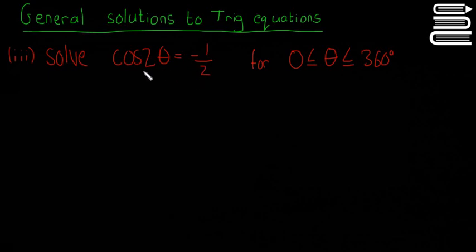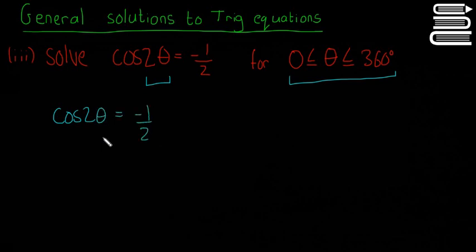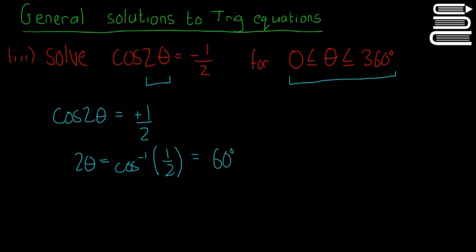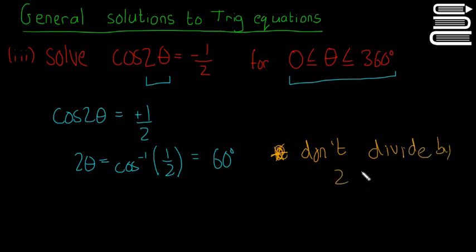So the reason this one's more difficult, there's a little bit more to it — we have cos of 2 theta. The first thing we're going to do is write cos of 2 theta is equal to minus a half. And that means 2 theta is equal to the inverse cos of a half — remember, you forget the minus for this step. The inverse cos of a half is equal to 60 degrees. Don't divide by 2 yet. A lot of people will say, if 2 theta equals 60 degrees, then theta equals 30 degrees — and that is true, but you divide by 2 later.